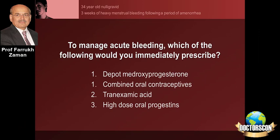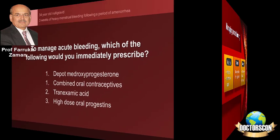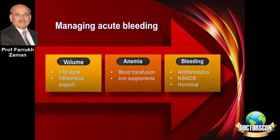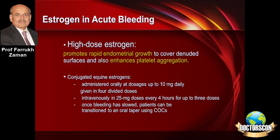If the diagnosis is polycystic ovaries, what would you give? Options include a preparation of medroxyprogesterone like Depo-Provera, combined oral contraceptive pill, tranexamic acid like Transamine, or high doses of oral progesterone. In managing the acute bleeding, the points to remember are about volume, the effect of blood loss in terms of development of anaemia, and how bleeding would be controlled by antifibrinolytic medications like tranexamic acid, or NSAIDs like mefenamic acid, or hormonal support.